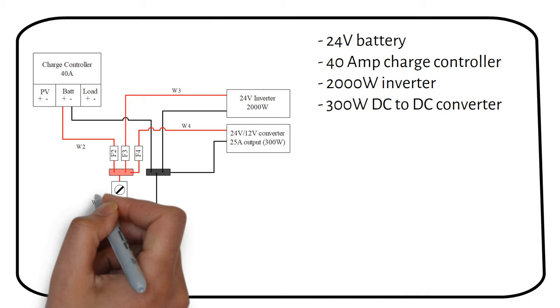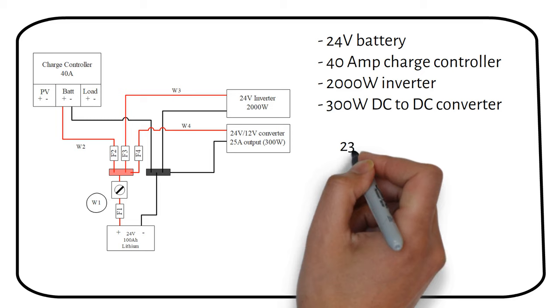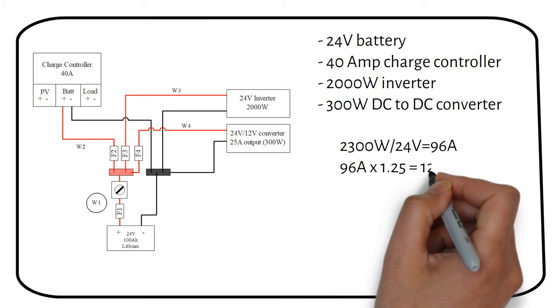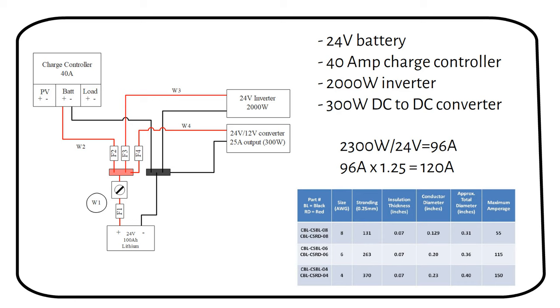The maximum total power through this wire is 2000 watts from the inverter plus 300 watts from the DC to DC converter. We divide the total power by the battery voltage. 2300 watts divided by 24 volts equals 96 amps. We then multiply by the safety factor of 125% to become 120 amps. We need to select a wire that can handle 120 amps. This is a 4 gauge wire.